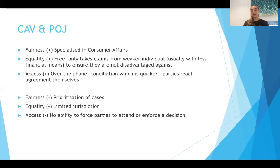However, fairness is undermined because CAV still does prioritise some cases due to reasonably limited resources, based on the types of issues and circumstances of the parties. Equality is undermined due to the limited jurisdiction in the sense that it doesn't take claims from landlords and businesses, even if they wouldn't be able to afford a case in court. Access is undermined because CAV has no ability to force parties to attend or enforce a decision, so it can actually waste time — if you go through all the processes at CAV, reach a decision, and then the defendant refuses to pay, you have to go back through that process in court or at VCAT.